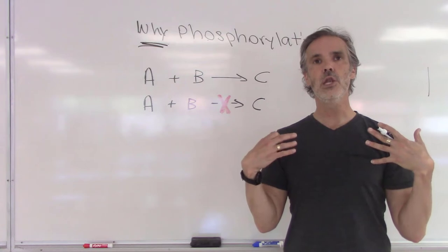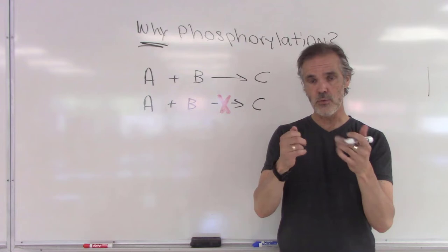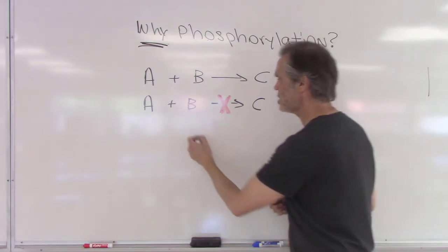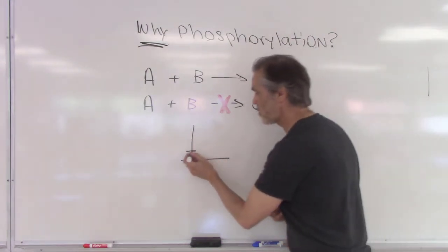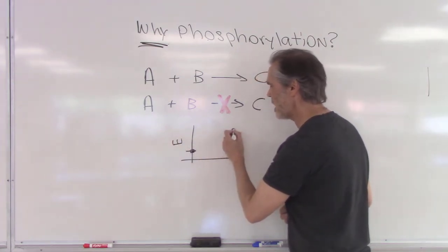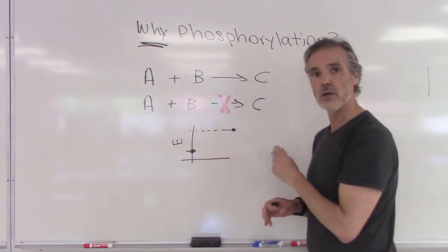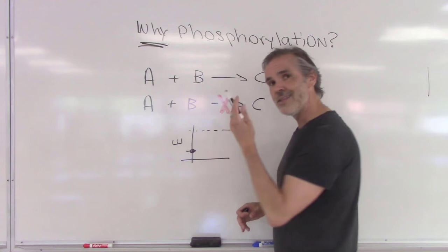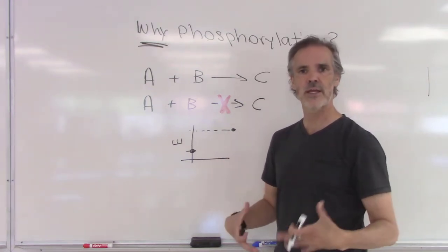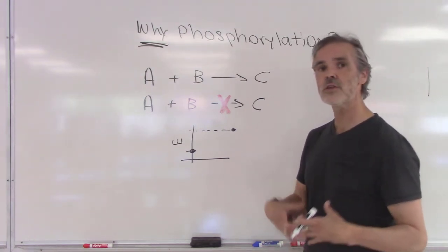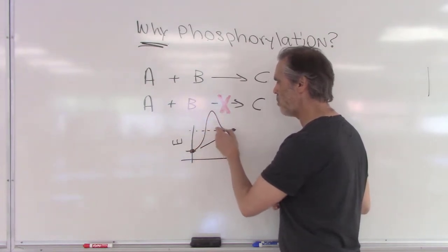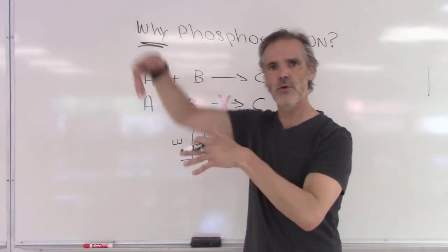Remember that when we looked at enzyme reactions, we looked at those graphs where you have the activation energy. We have a component that starts at a certain level — that's our starting molecule. We want to convert this molecule to something that has more energy, so at the end the energy level will be higher than what we started with. In order to do this, we need to inject energy into the system. Enzymes can do this. We know that enzymes can make reactions possible that could be impossible at room temperature or even at 37 degrees Celsius.